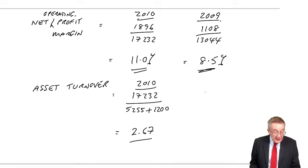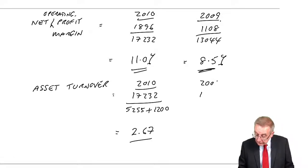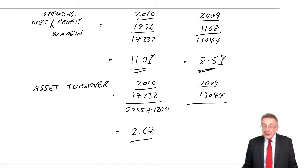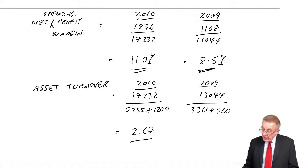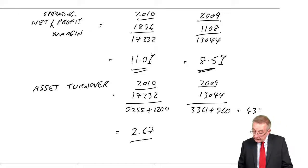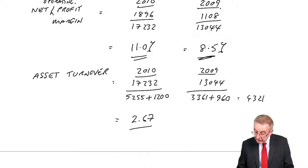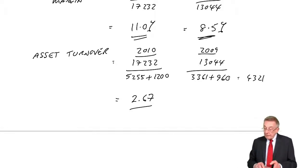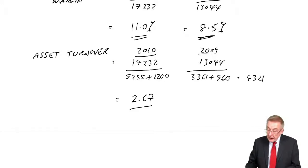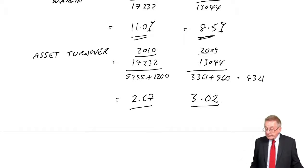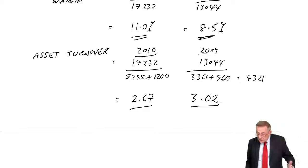What was it last year? In 2009, sales were 13,044, but the company was smaller — equity 3361 plus long-term borrowing 960, total 4321. So 13,044 divided by 4321 gives 3.02. That's gone down a bit, which isn't as good. Ideally, we'd want both profit margin and asset turnover to increase.